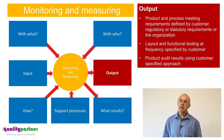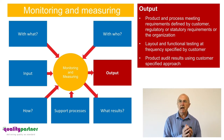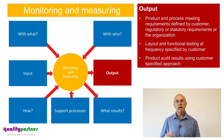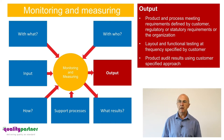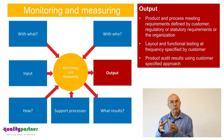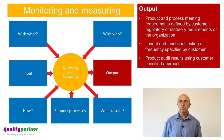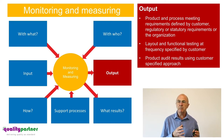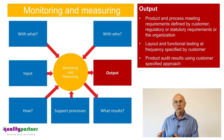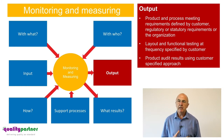Now let's look at some of the outputs of monitoring and measuring. The primary output is product and process meeting requirements defined by the customer, by regulatory or statutory requirements, or by the organisation — meaning that whatever we've defined to monitor and measure, we are doing that effectively on a day-to-day basis. The next output is layout and functional testing.